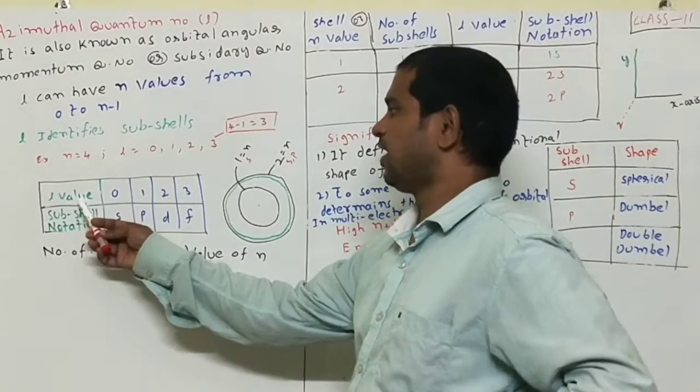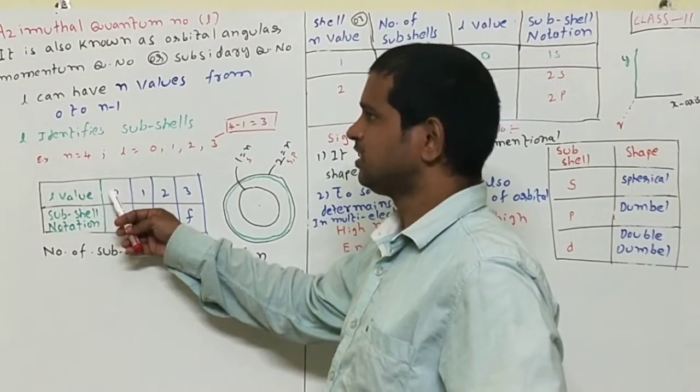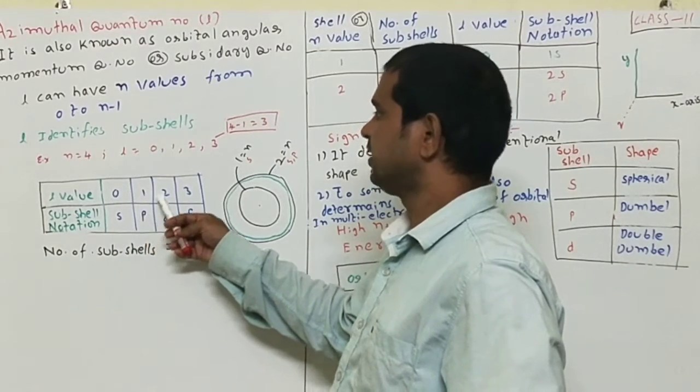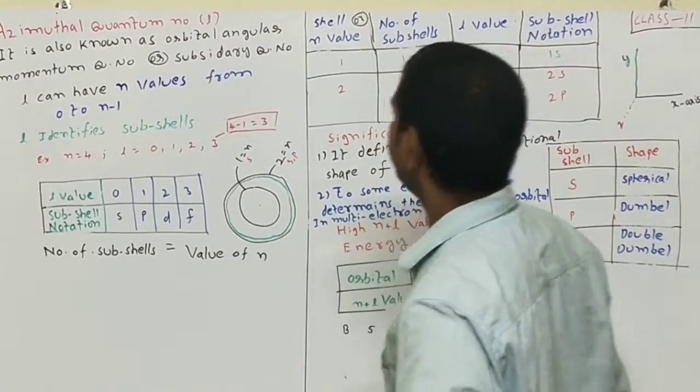See here, L value and subshell notation. If L equals 0, the notation is S. If 1, P. If 2, D. If 3, F.